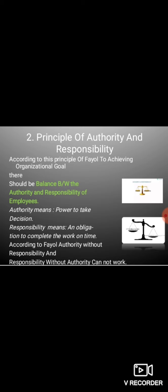Next principle of Fayol is Authority and Responsibility. इस principle में Fayol ने कहा कि हमें अपनी organization में authority and responsibility के बीच balance maintain करना चाहिए। There should be equal authority and responsibility to an employee. अगर आप किसी employee को authority दे रहे हैं तो उसी के बराबर responsibility होनी चाहिए। Authority means power to take decisions, and responsibility means an obligation to complete the work on time.